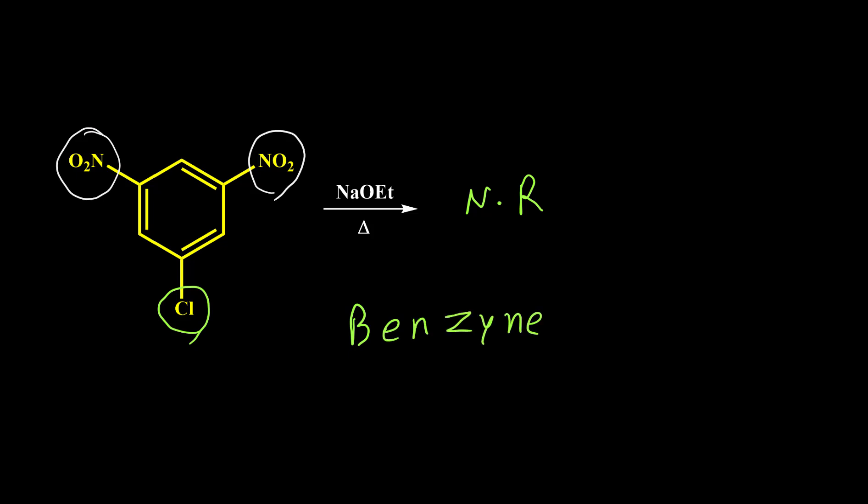We may get a product from this compound by another mechanism — benzyne — under harsher conditions. I explain benzyne in a separate video; you can find the link in the description below. The next example is 2,4-dinitrофluorobenzene, also known as Sanger's reagent, which is used for labeling NH2 groups on proteins and peptides and for finding the sequence of amino acids in proteins.